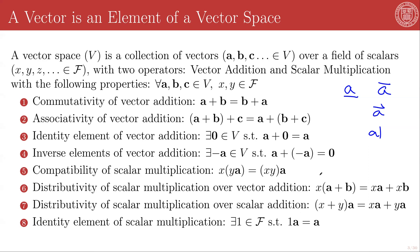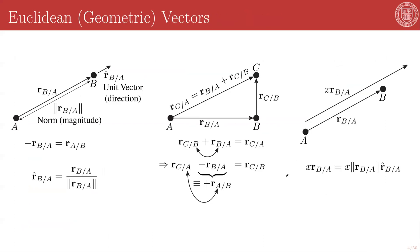All right, so that is it. Again, any set of things that have these two operators that behave in this fashion is a valid vector space.